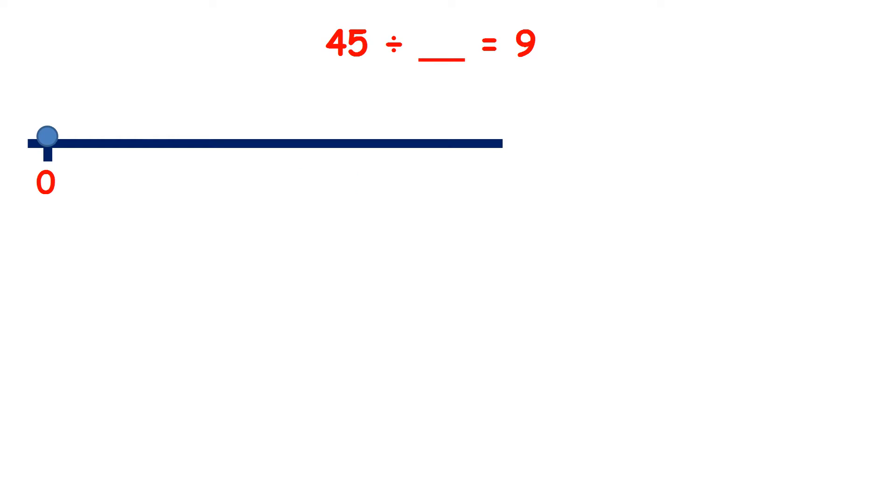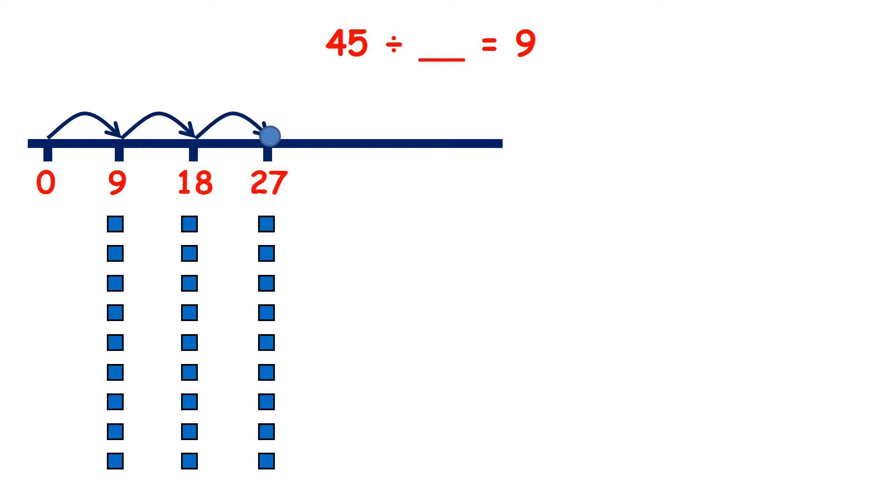Now we have 45 divided by something equals 9. So let's count in steps of 9 until we get to 45. 9, 18, 27, 36, 45. We needed 5 jumps to get to 45, so our answer is 5.